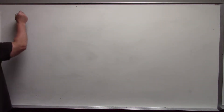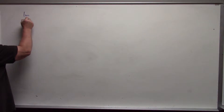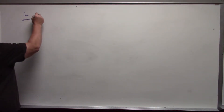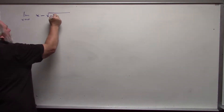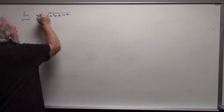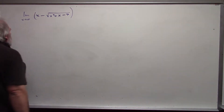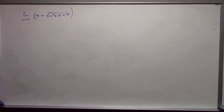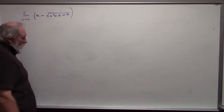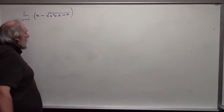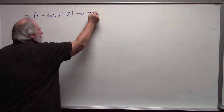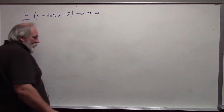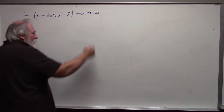First, let's consider the limit as x approaches infinity of x minus the square root of x squared plus x minus 7. As x approaches infinity, x is approaching infinity, and the square root part is also approaching infinity. So this is approaching infinity minus infinity, which is an indeterminate form.